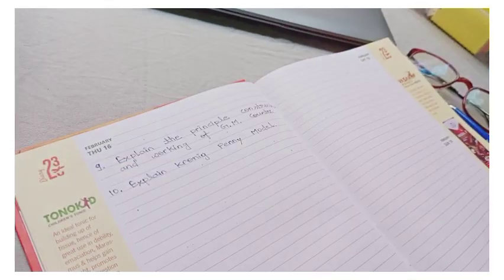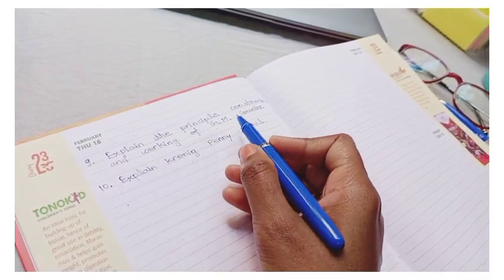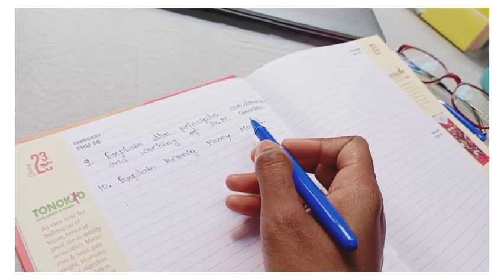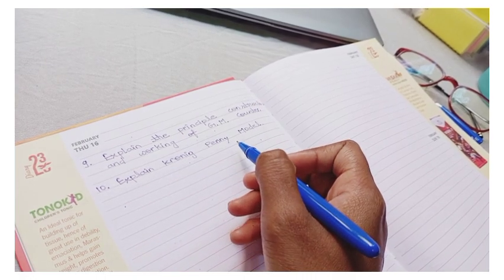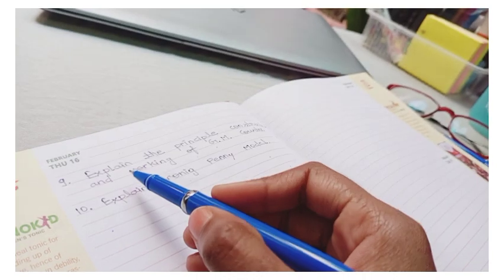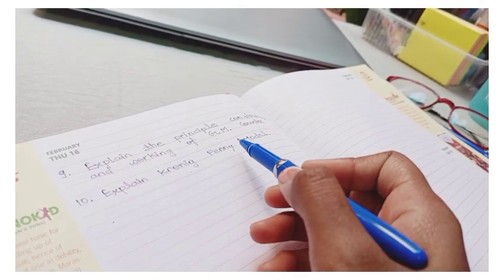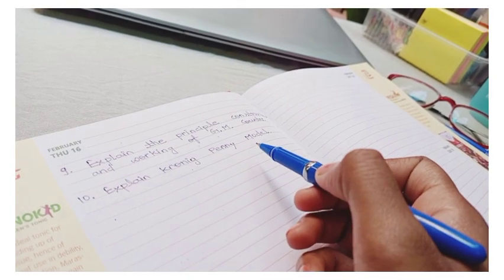And question number nine is: explain the principle, construction and working of GM counter. GM is a diagram based question. You have to explain the principle and construction. Question number ten is: explain the Cronin-Penny model. This is also very important.